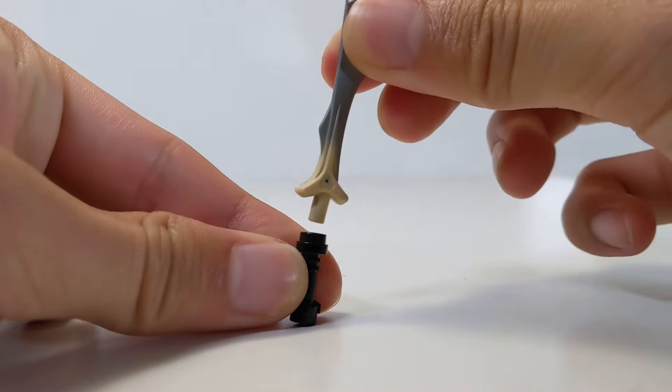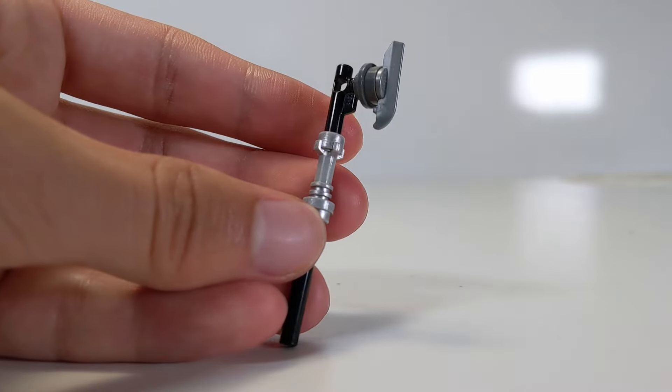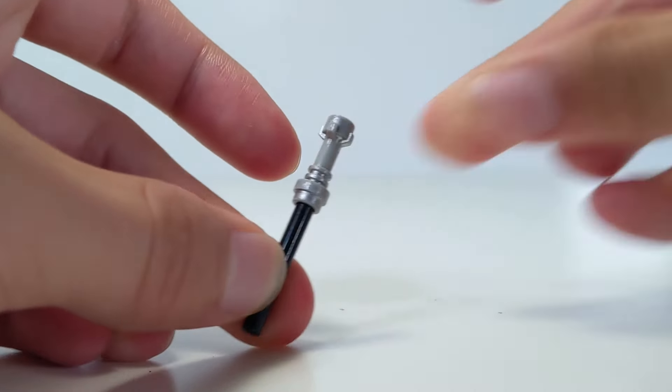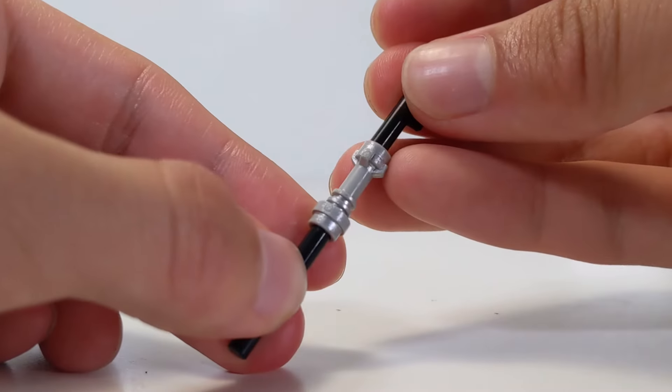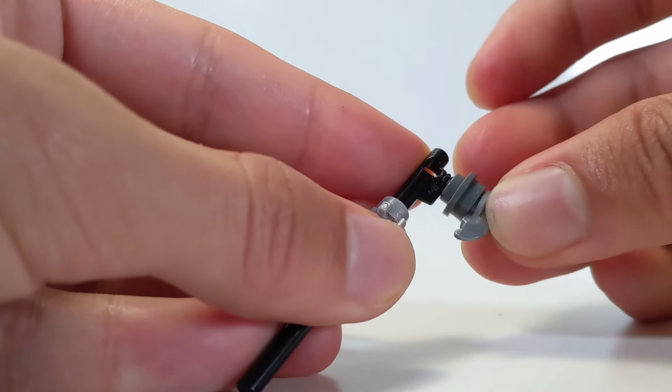You can also build a cool axe. All you have to do is attach a three long bar to a lightsaber hilt, and then place a hose or pistol, a stud with a hole in it, and then a skate.